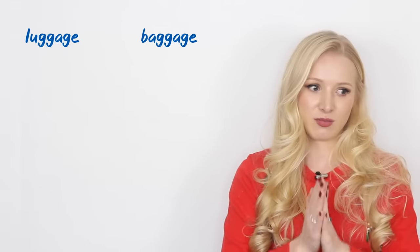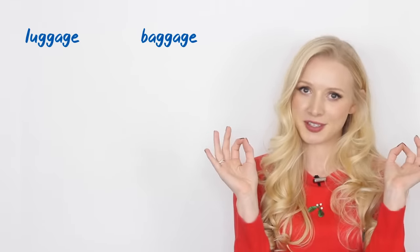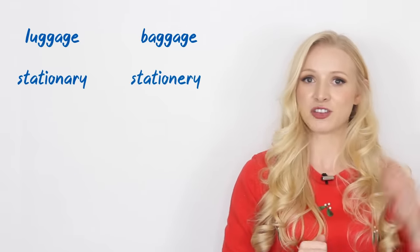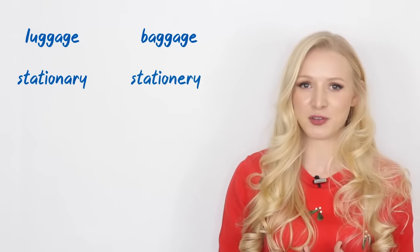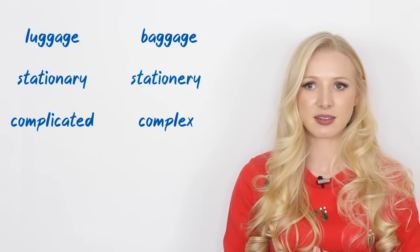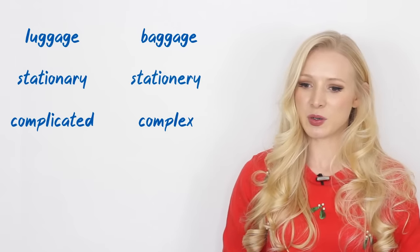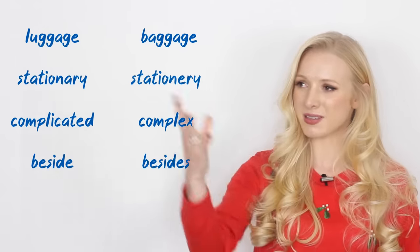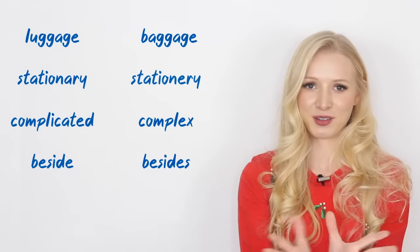Hello everyone and welcome back to English with Lucy. Today, I am going to teach you how to correctly use 10 pairs of really confusing words. These are words that both learners of English and seasoned speakers of English get wrong. Words like luggage and baggage - they mean the same thing, but we use them in different ways sometimes. What about stationary and stationary, pronounced in the same way, but again, different uses. What is the difference between complicated and complex? Is there a difference? And how should we use beside or besides? All of this will be covered in this lesson.